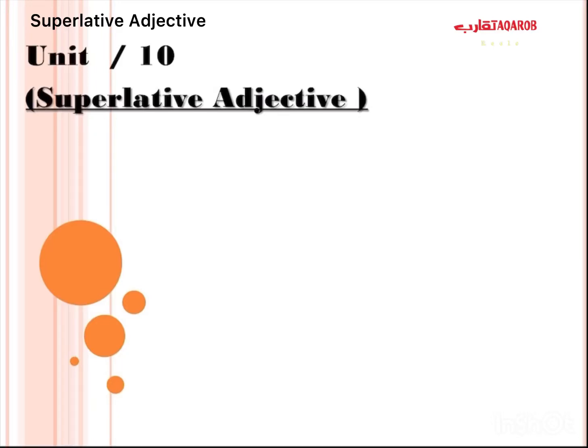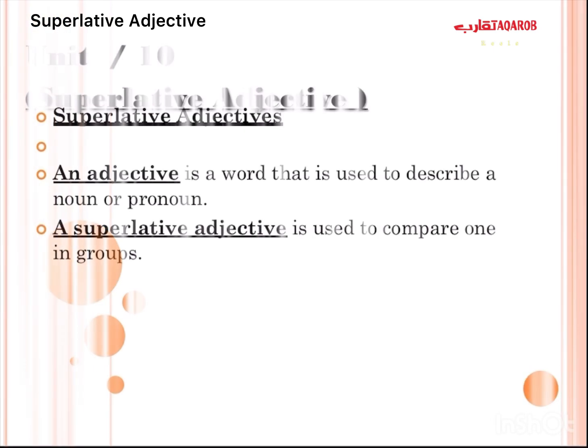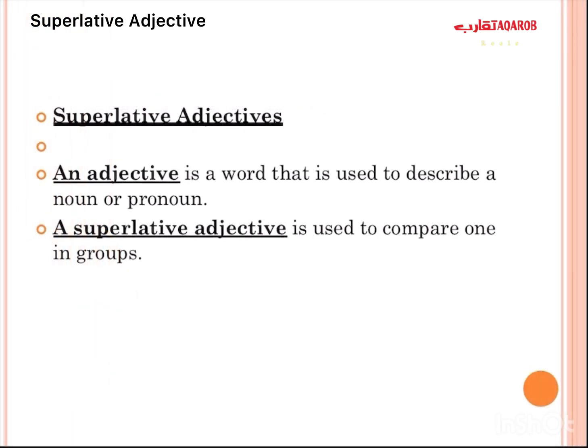Welcome back. In this video we're going to explain the grammar lesson — superlative adjectives. But before we explain this rule, we have to know what's the meaning of adjective. An adjective is a word that is used to describe a noun or pronoun.